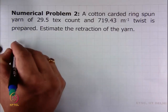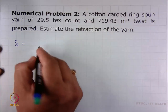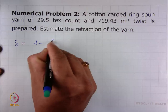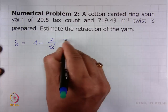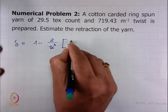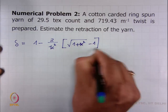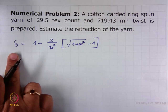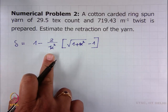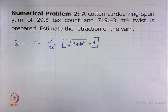What is yarn retraction? Yarn retraction, as we have already learned, is given by 1 minus (√(1 + κ²) − 1), where κ is the yarn twist intensity. So we have to determine the yarn twist intensity κ, which equals π × d × z, before we can solve the problem.